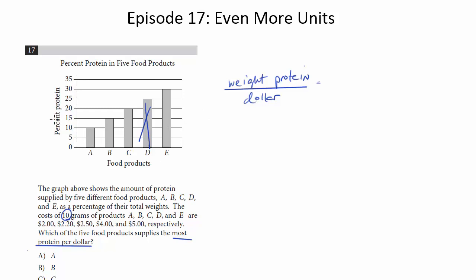So for A, it's 10% protein. So 10% of 10 grams will just be 1 gram. So we'll put the 1 right here. So it's 1 gram of protein. And then we're going to divide that by $2. So that gives us a half.